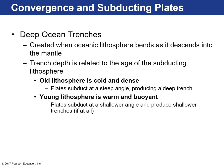Deep ocean trenches are created when ocean lithosphere bends downward into the mantle. The subduction angle — the angle at which the subducting ocean plate dives into the mantle — depends on the density of the ocean crust, which depends on its age. Old lithosphere is cold and dense, so it sinks at a steeper angle. If you're subducting young lithosphere very close to the mid-ocean ridge, it's warm and buoyant, so its subduction angle is diminished.